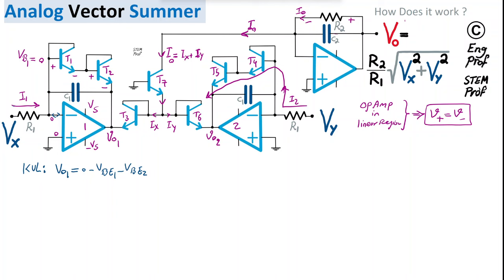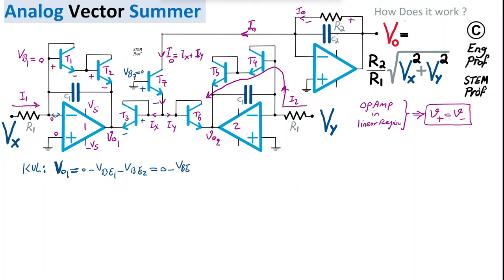The base of transistor T7 is also at zero volts. Writing a second KVL from that node gives: Vout1 = 0 − VBE7 − VBE3. Therefore, combining both KVL equations: VBE1 + VBE2 = VBE7 + VBE3.